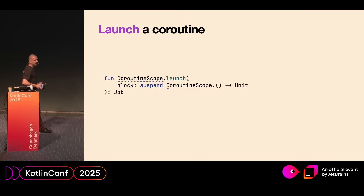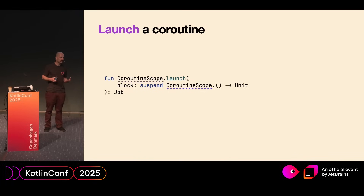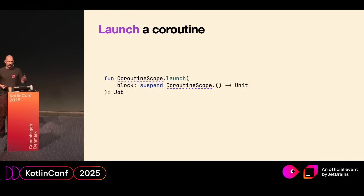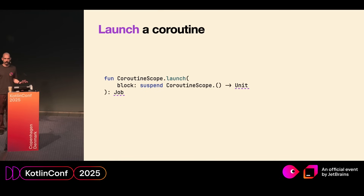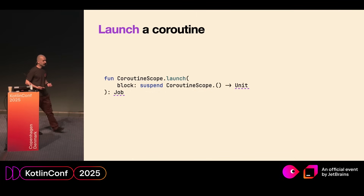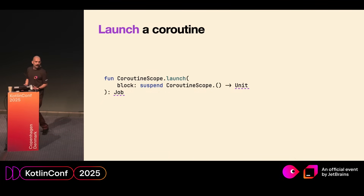What if we do not need to return a meaningful value of type T? What if we just need to run some arbitrary side effects? We can use the launch builder from the Kotlinx coroutines library. The launch builder does not expect a meaningful value of type T — it expects unit — and it returns you a job. A job is also a reference to the running coroutine, but it can only be cancelled or joined.